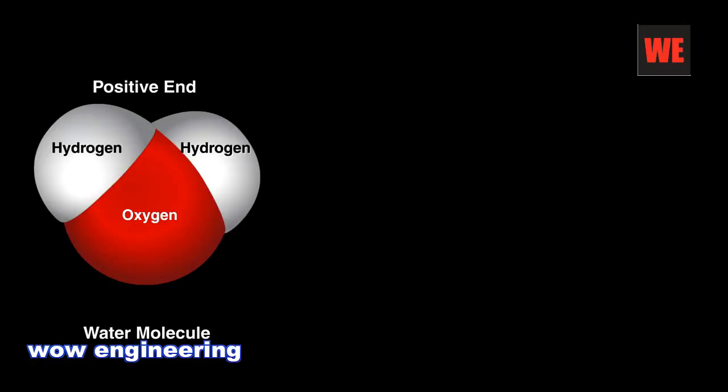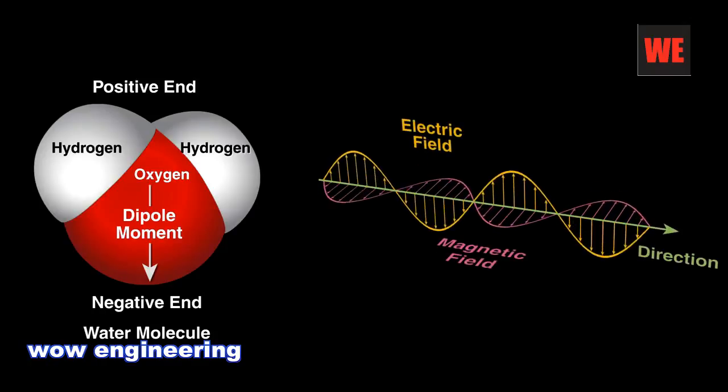Our food is filled with water, which is positively charged at one end and negative at the other. To give these molecules more energy, we expose it to electromagnetic waves that emanate from the tube.